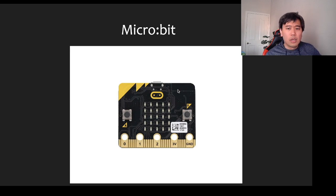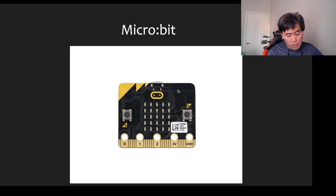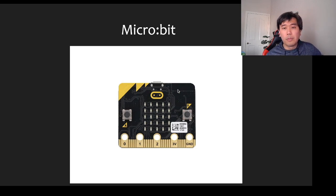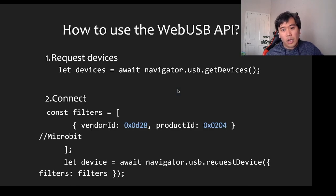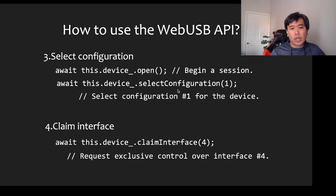I'm also going to use micro:bit for the Web USB demo. With Web Bluetooth earlier, the cable was just for power. For Web USB, the cable is used for both power and data transfer. To use it, call navigator.usb.getDevices to get the list of devices. You need to know the vendor ID and product ID — in this case for micro:bit — then call navigator.usb.requestDevice.